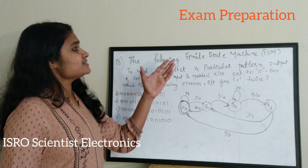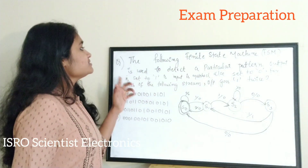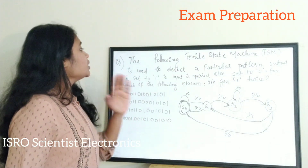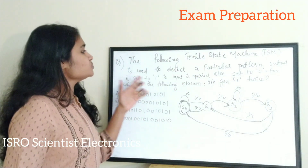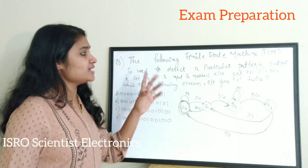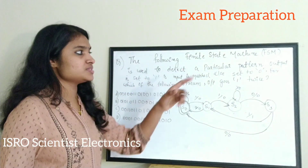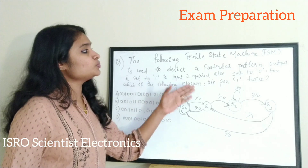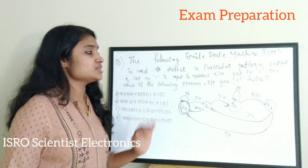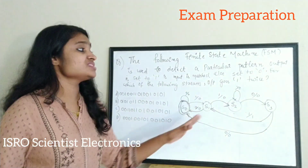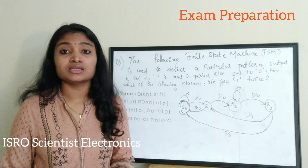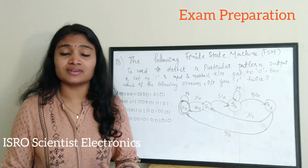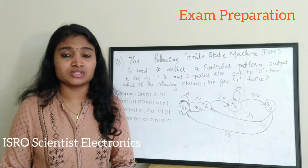The first question: the following finite state machine is used to detect a particular pattern. Output is set to 1 if input is matched, else set to 0. For which of the following streams does the output go to 1 twice? This is a sequence detector type of question. To answer it you should have an idea about finite state machines.